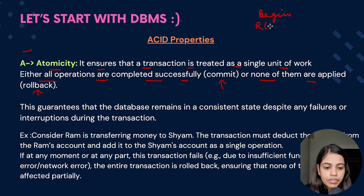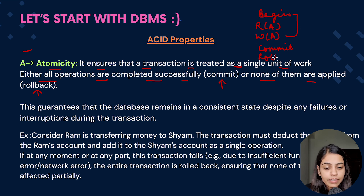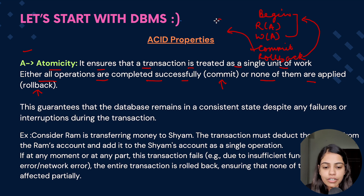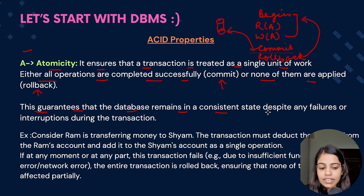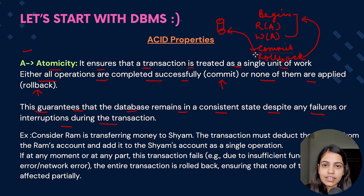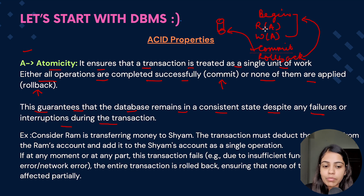Consider a transaction: we begin, read a value from A, update the value of A, then perform the commit. If at any point the transaction fails due to network failures or other issues, we perform a rollback and it goes back to its original state. If there are no failures, we perform the commit and the data is updated into our DB. This guarantees that the database remains in a consistent state despite any failures or interruptions.